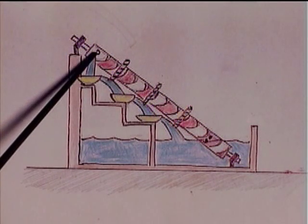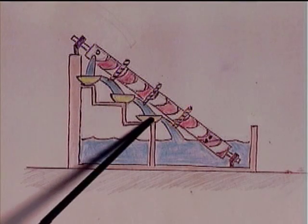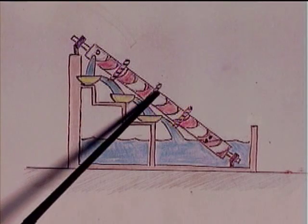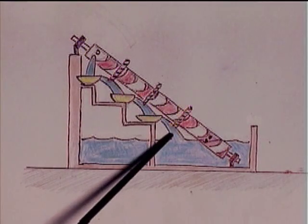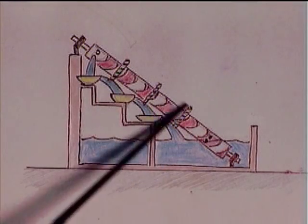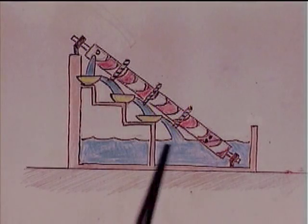As the water flows from bowl to bowl to bowl, it causes these water wheels to turn. This causes the tube to turn. At least, that is the idea.